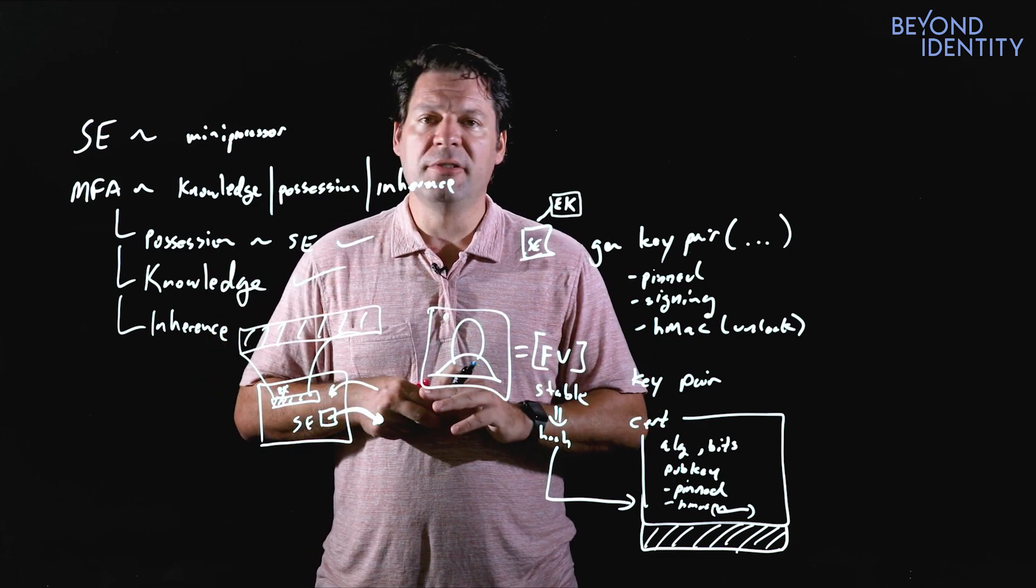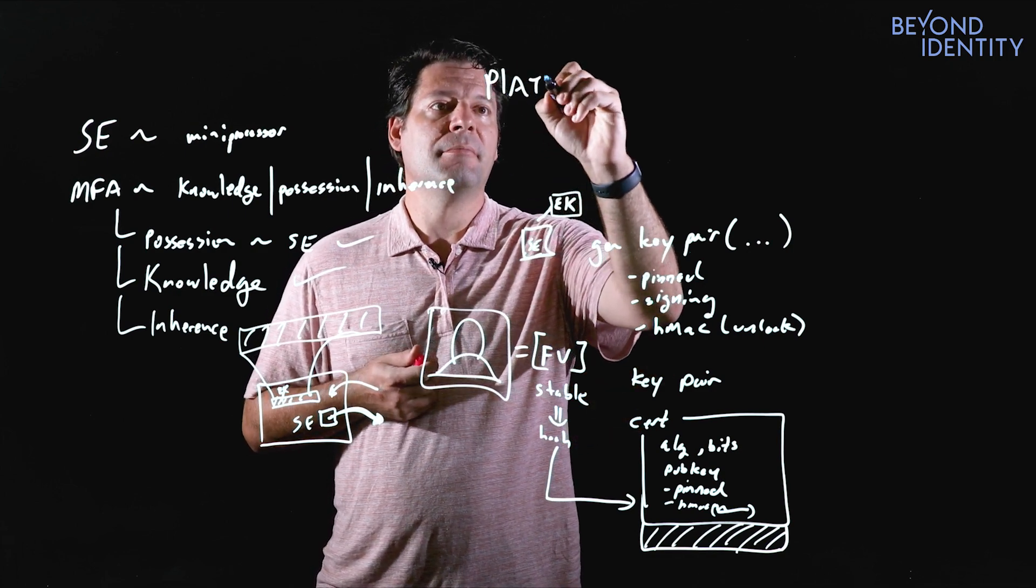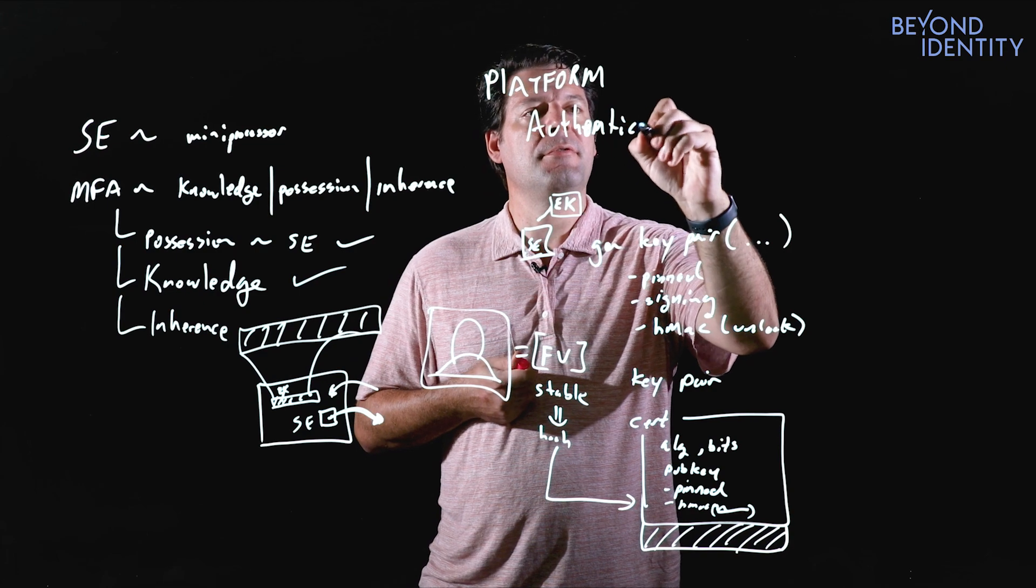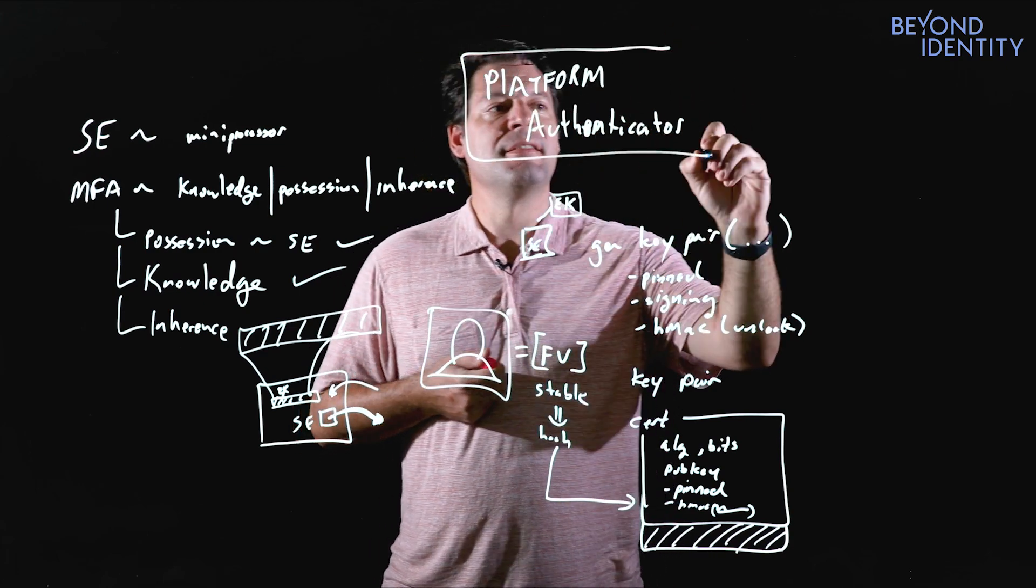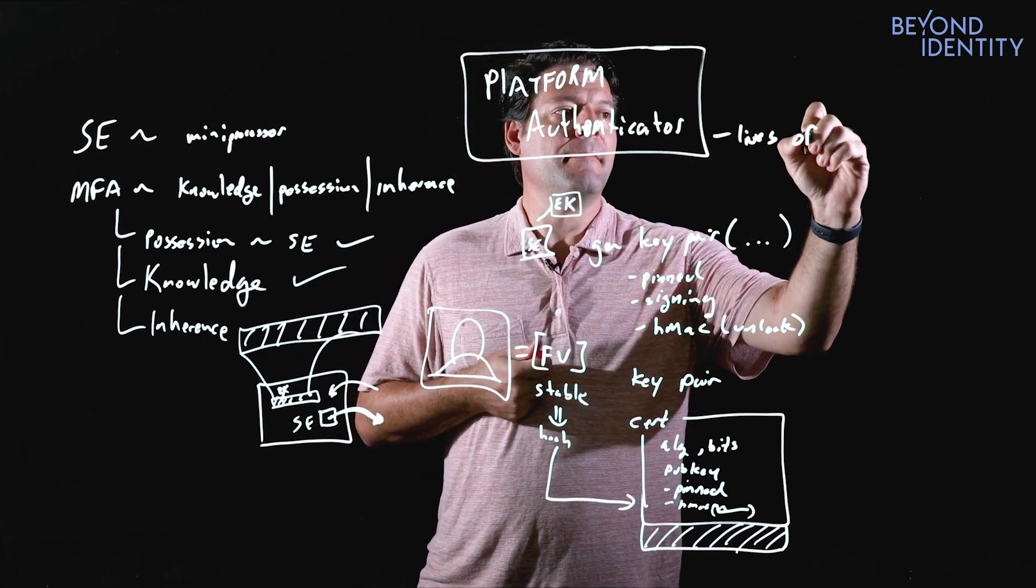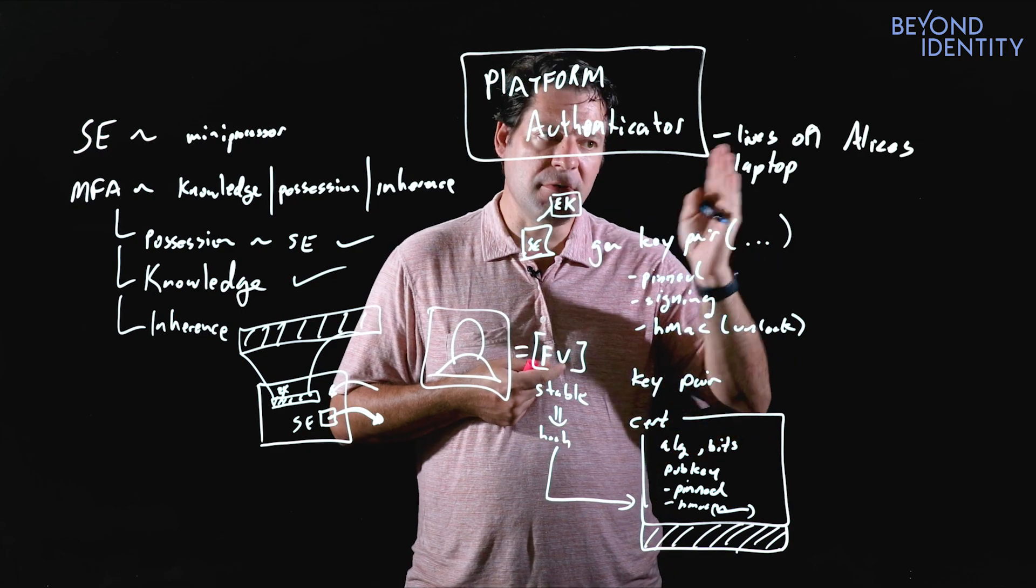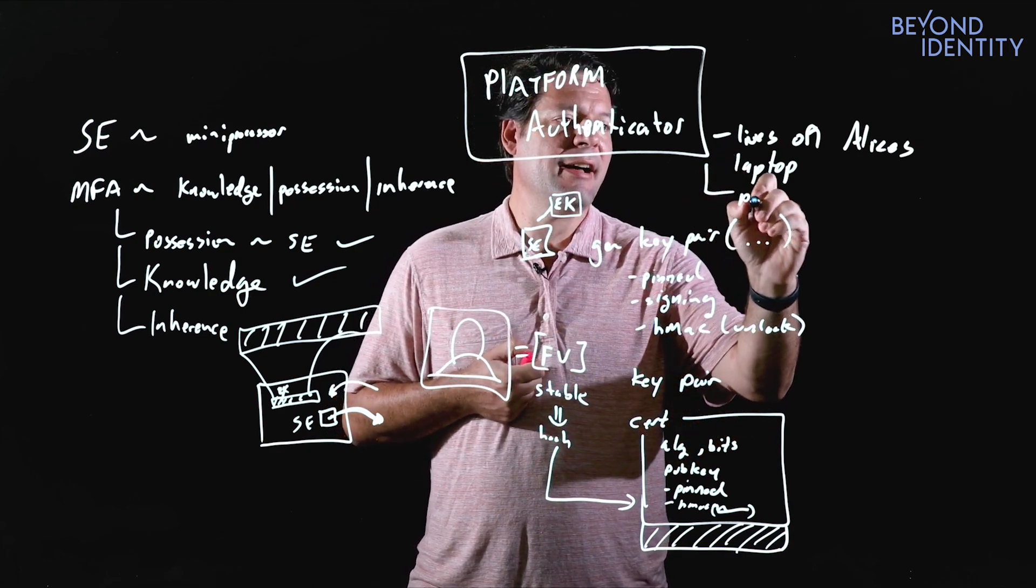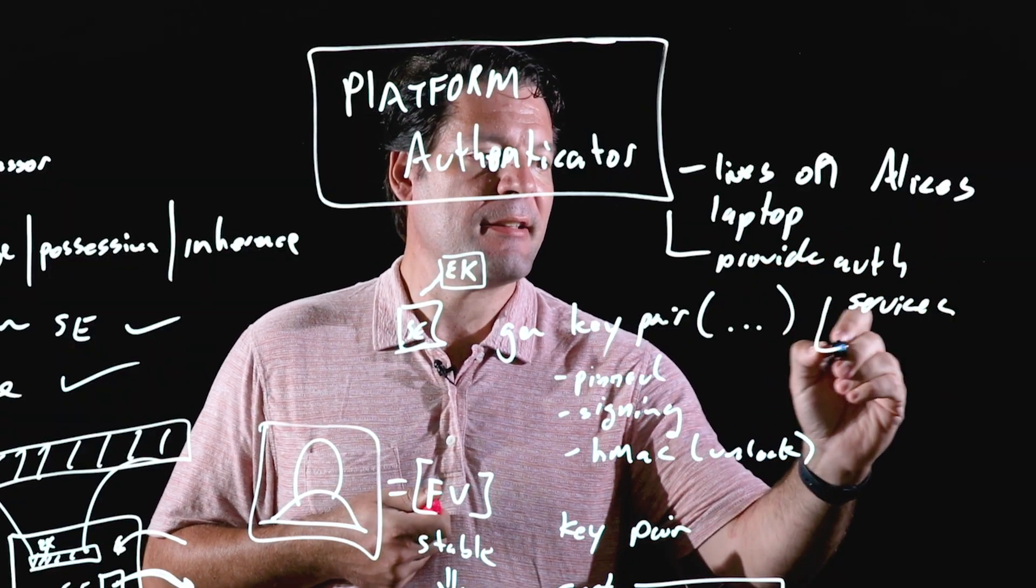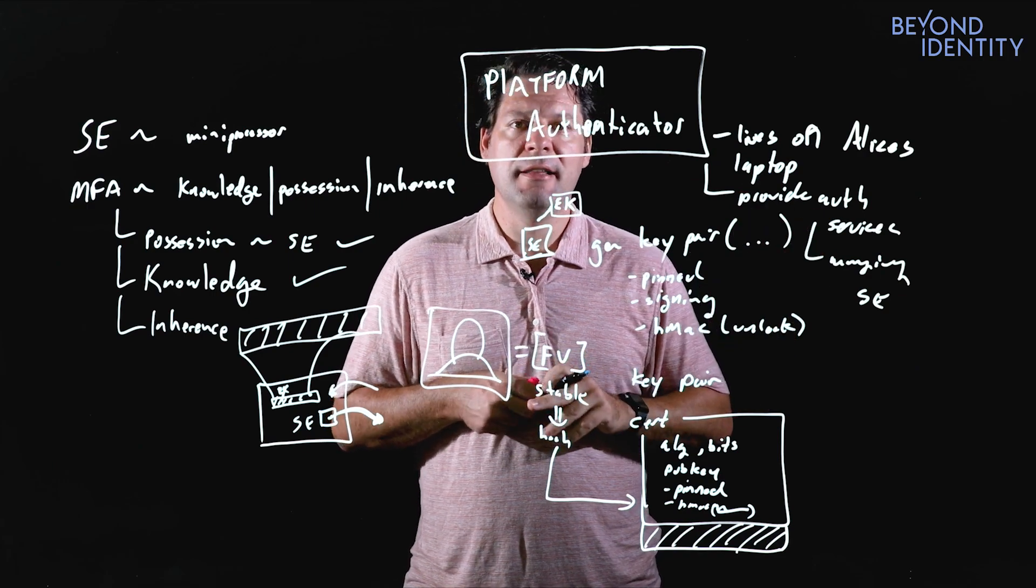So now we have enough of the building blocks for us to introduce the next topic, which is the platform authenticator, which forms the basis of the Beyond Identity architecture. So the platform authenticator, it lives on Alice's laptop because that's where she's doing the interesting thing we want to be on that machine. And it is going to provide authentication services, and it's going to do that by managing the secure enclave. We'll pick up on that in the next section of how we actually do that.